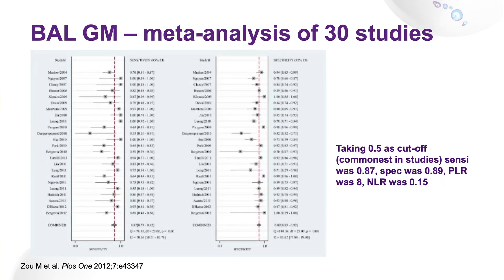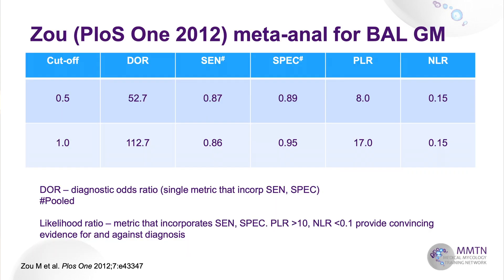BAL galactomannan is also a very useful tool. A well-known meta-analysis of 30 studies shows that if you take 0.5 as the cutoff — noting that EORTC criteria favour a higher level — the positive likelihood ratio was 8. If you bring the cutoff up to 1, sensitivity is not too badly affected, going from 0.87 down to 0.86, but specificity goes up a lot and the diagnostic odds ratio reaches a very high value. That's why I think the cutoff should be 1.